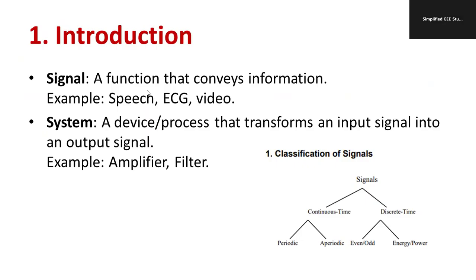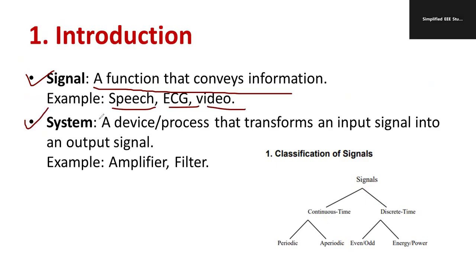There are important questions which are already repeated in exams and have a high chance of being asked again. The first topic to study is the definition of a signal. A signal is a function that conveys information — speech signals, ECG signals, and video signals are examples. A system is a device or process that transforms the input signal to an output signal.